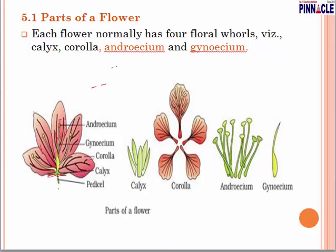From the isolated diagram you can see: the calyx, corolla — these are sepals and these are petals. One member is a petal, one member is a sepal; the group is corolla and the group is calyx. Then the male part, androecium, consists of the filament and anther, and the entire male reproductive part is called androecium. Then there is the gynoecium — the female part — with the ovary.